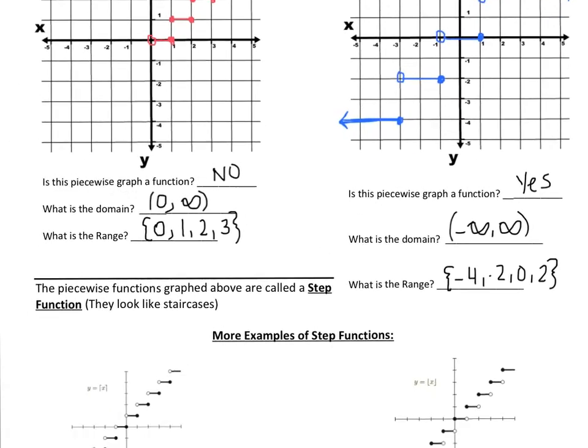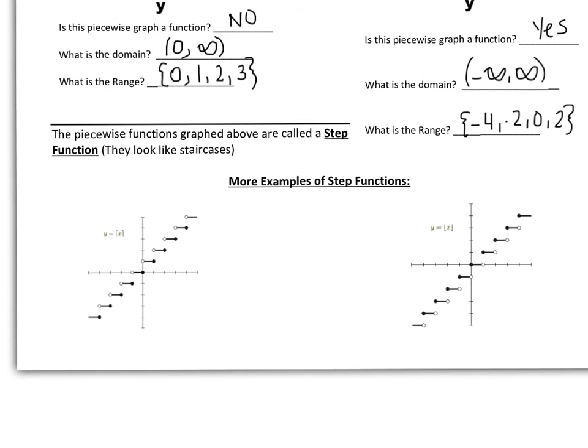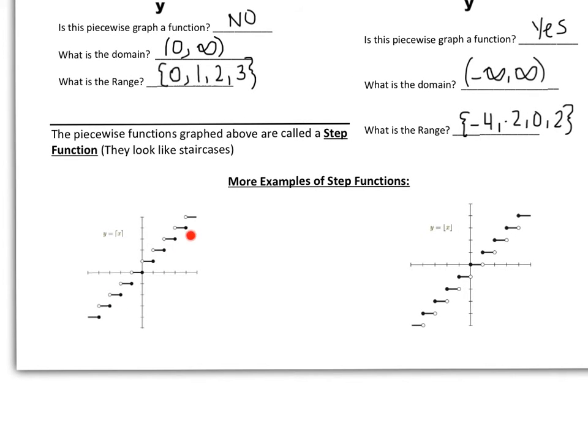All right. So what you just graphed, they're called step functions. These are two other examples of what step functions could look like. This one's going up this way. This one's going up this way, except the dots are a little bit reversed. Basically anything that looks like one of these two things would be considered a step function. All right. Let's go on to the next page and discuss a word problem.